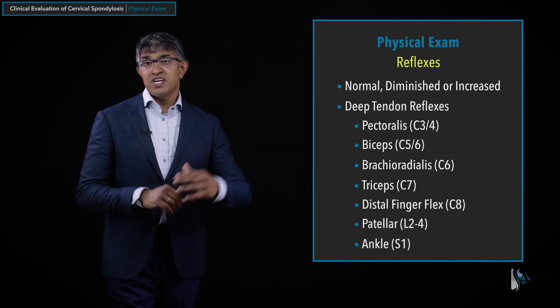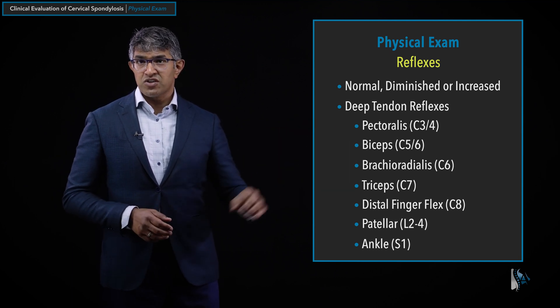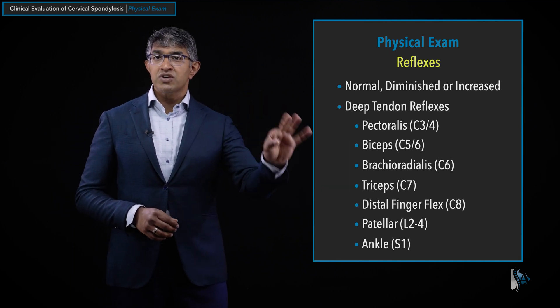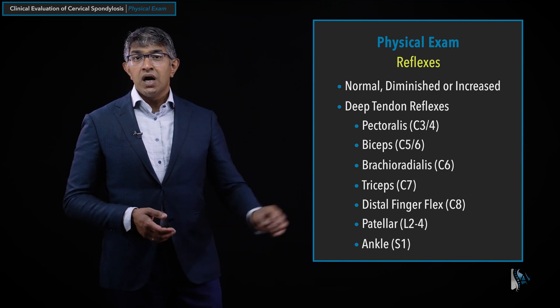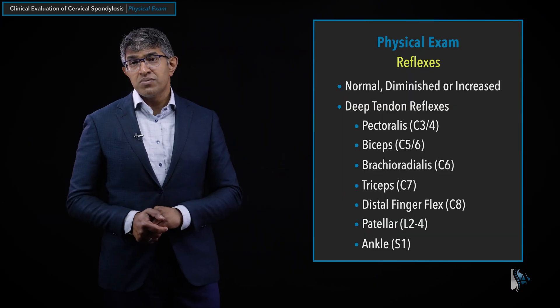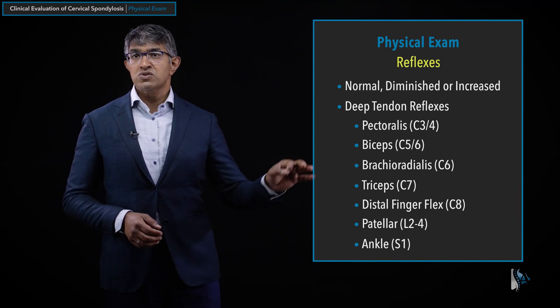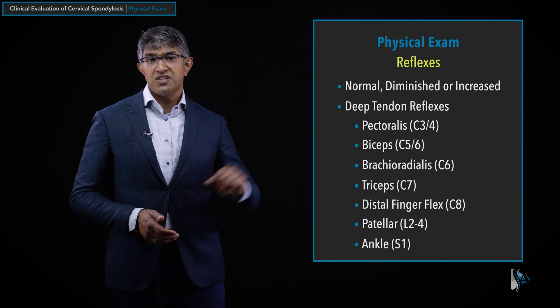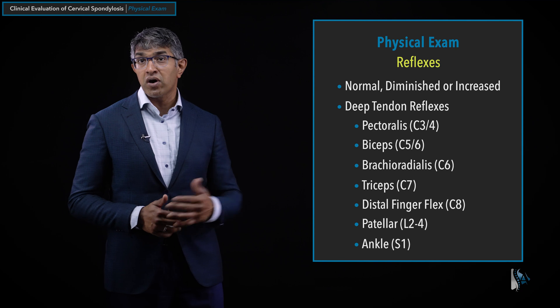In terms of the reflexes I check, I usually check them all. The pectoralis reflex I check on rare occasions — it's not often you're looking for a C3/C4 radiculopathy. Biceps, brachioradialis, and triceps are routine. I often do a finger flexor reflex as well. Looking at the lower extremities — knee and ankle — is useful particularly for spinal cord dysfunction. If every reflex is absent, that suggests a problem with the peripheral nerves in general. This is why reflexes are such an important part of a good neurological exam.